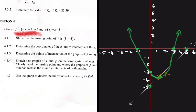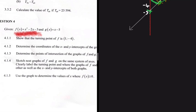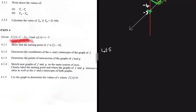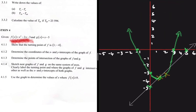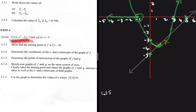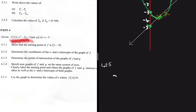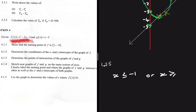4.1.5: Use the graph to determine the values of x for which f(x) is greater than 0. From the graph, f(x) is greater than 0 from minus 1 going to the negative direction, and from 3 going to the positive direction. So the answer is x less than or equal to minus 1, or x greater than or equal to 3.